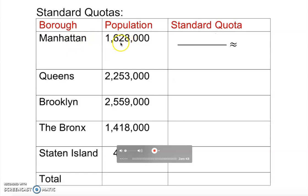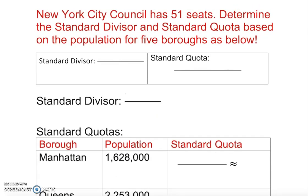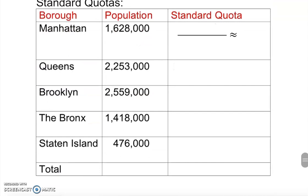Manhattan's total is 1,628,000, and Queens is listed as well. If you add all of them you get the total population. Use a calculator without commas to add them up — that gives you 8,334,000. We need the total population because the standard divisor is total population divided by number of seats.